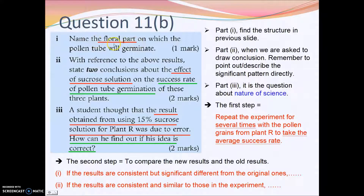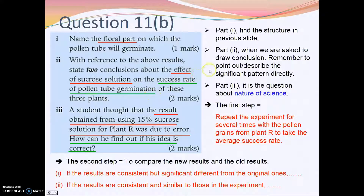For part B1, name the flower part on which the pollen tube will germinate — check the previous slide to see where pollen grains land. For part B2, you need to draw a conclusion about the effect of sucrose solution concentration on the success rate of pollen tube germination. When drawing conclusions in biology, simply describe the significant pattern you observe and state the conclusion directly — that is sufficient.